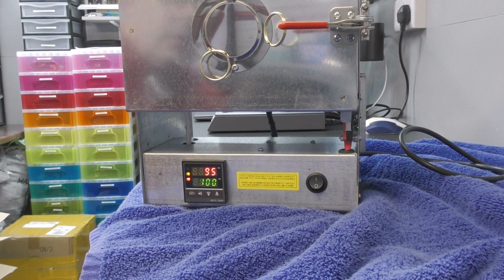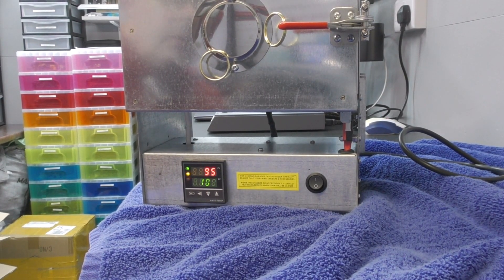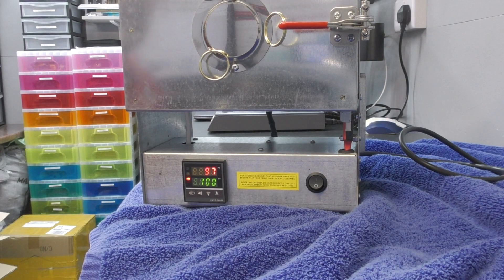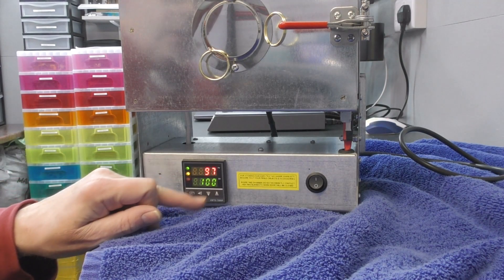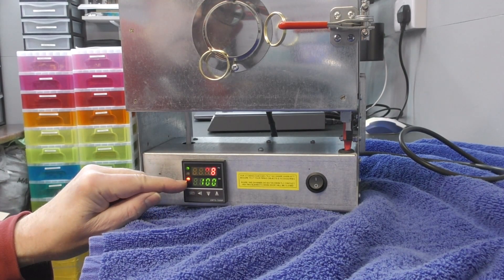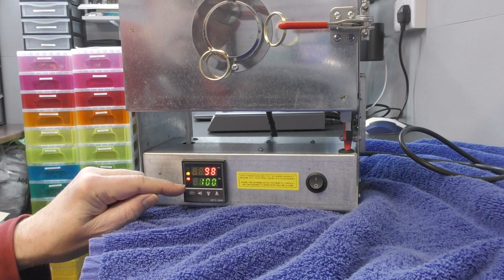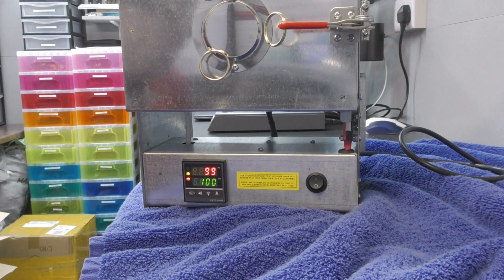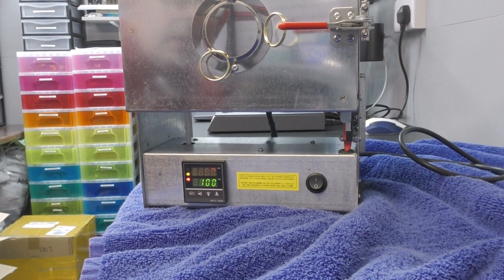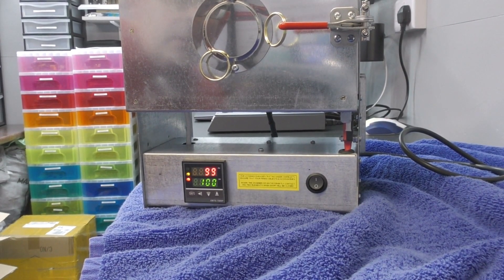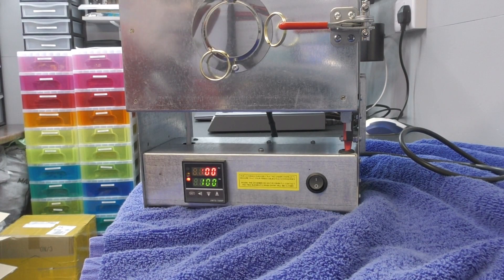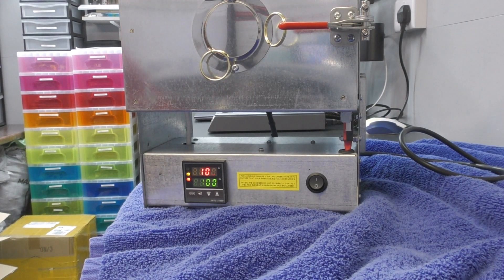Now if this is correct, that will sit at 100 degrees and not go up any further. So that is working out of the box exactly as the instructions have stated. We've got set value, process value. Apparently you can ignore these alarms here. The only one that really matters is this top one that is flashing. Every time that flashes it shows that heat's being applied.